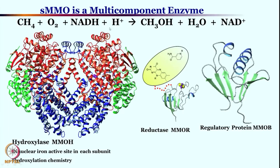Methane requires oxygen and NADH/H⁺ to form methanol. This is a multi-component enzyme: the components are the hydroxylase MMOH, the reductase MMOR, and the regulatory protein MMOB. This is a gigantic protein having many subunits — alpha, beta, and gamma. In each alpha subunit there is a diiron center responsible for converting methane into methanol; that means the hydroxylation chemistry is happening there.